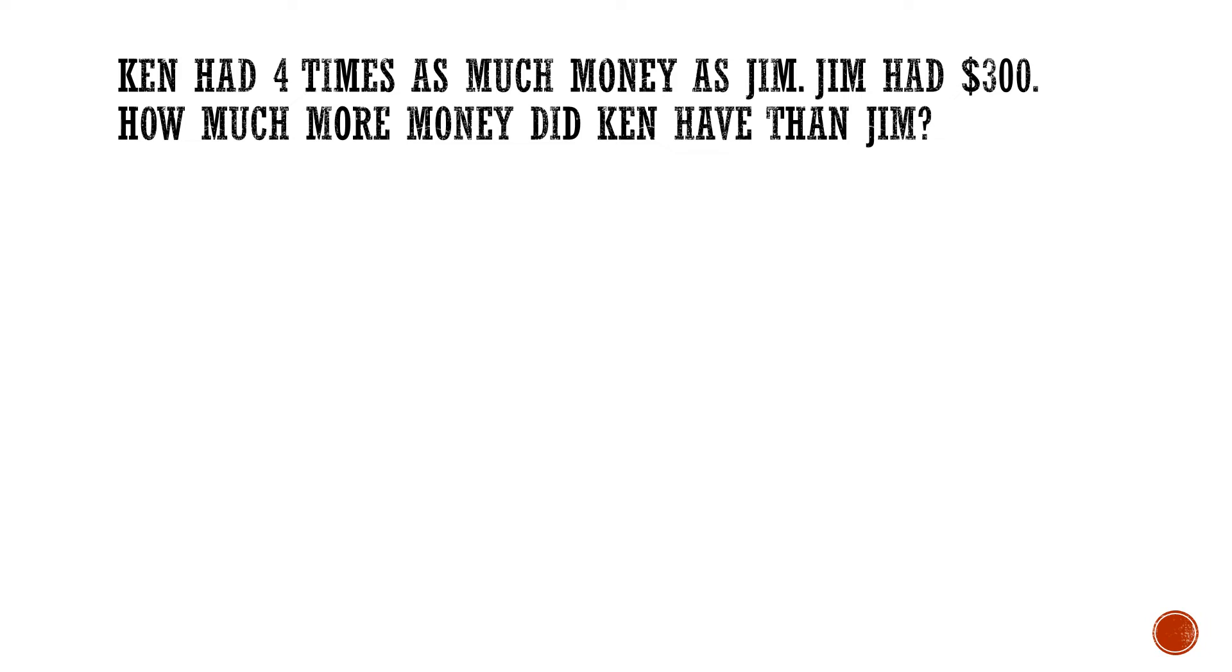Let's move on. Ken had 4 times as much money as Jim. Jim had $300. How much more money did Ken have than Jim? Now for this one, you have to draw a model. Ken has 4 times as much money as Jim. Ken, Jim. Again, when you have a unitary method, you have to label it as 1 unit. Jim had $300. How much more? The keyword is more. There's a question mark over here. So you got to find the unknown difference.